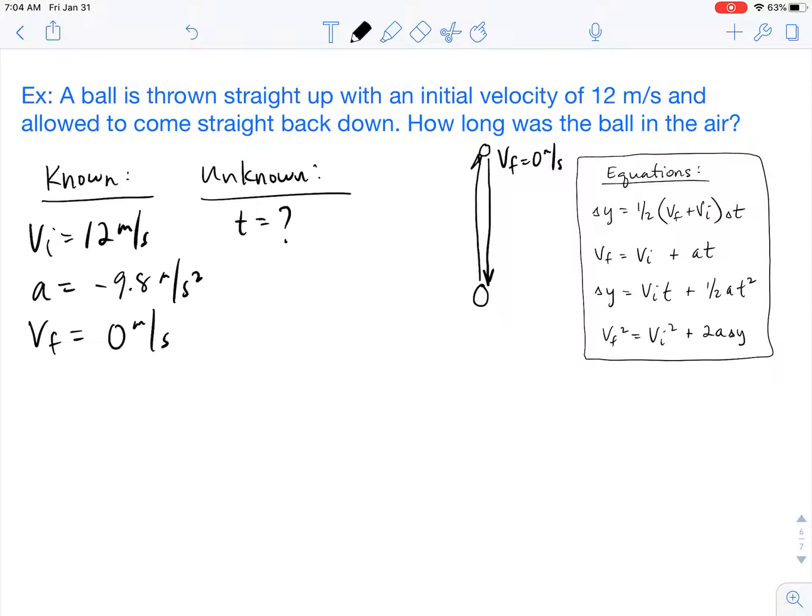VF is zero. So when we take a look at our knowns and our unknowns, the only thing that's not listed at all, the only thing that didn't tell us about at all was the height or the distance that is traveled. So when we take a look at our equations, we're going to find the equation that doesn't have delta Y in it. So it turns out that the only equation that doesn't have delta Y is this one.